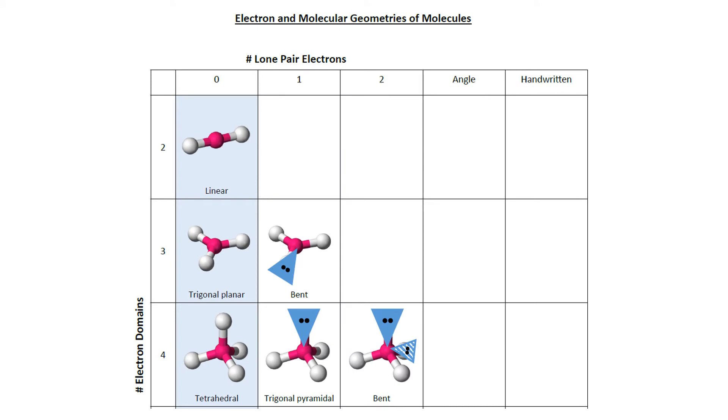When we look at our basic electron geometries, those electron geometries are shown in this first column of this table. This is showing the geometry assumed by the electron domains as they repel and spread themselves out around the central atom.